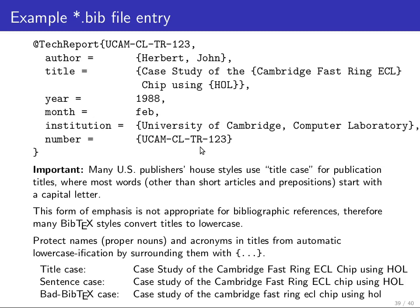So how does a .bib file look? It contains a series of entries, one for each document, in a database-like format. After an at-sign, you specify what type of document it is — a journal article, conference paper, technical report, dissertation, or miscellaneous for things like a piece of software. Then you specify an alphanumeric identifier by which the author can refer to it with the cite command, followed by fields like author, title, year, and so on. Appendix B of the LaTeX book contains a list of which types of documents can have which database fields.